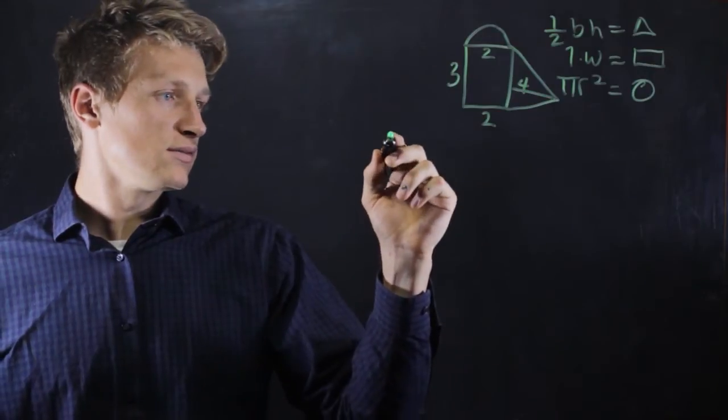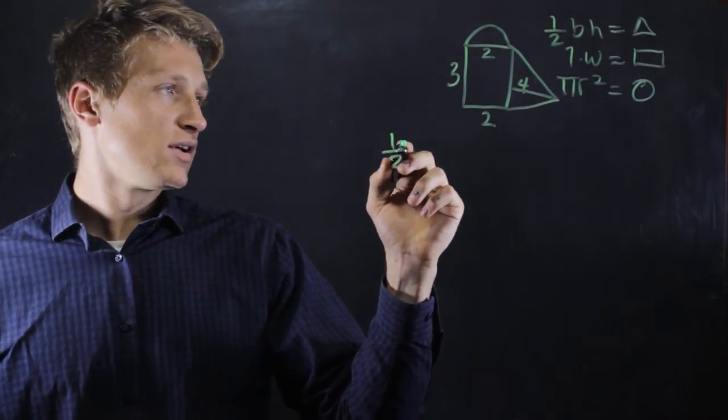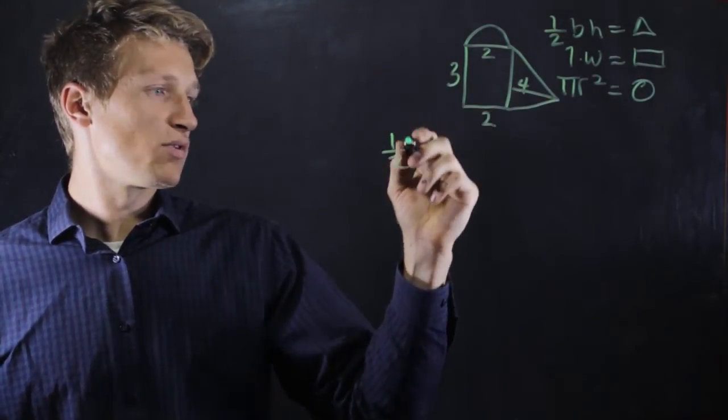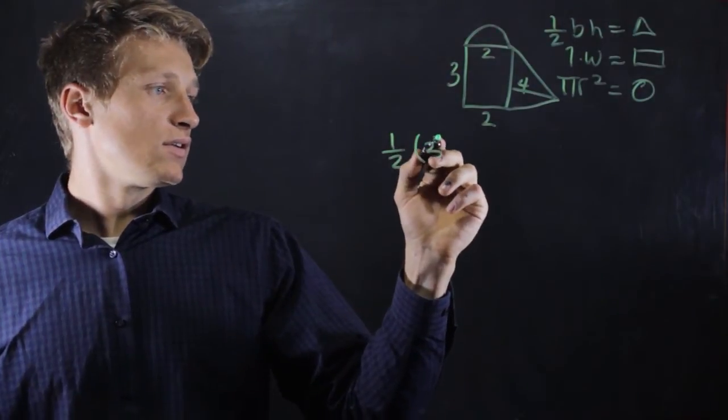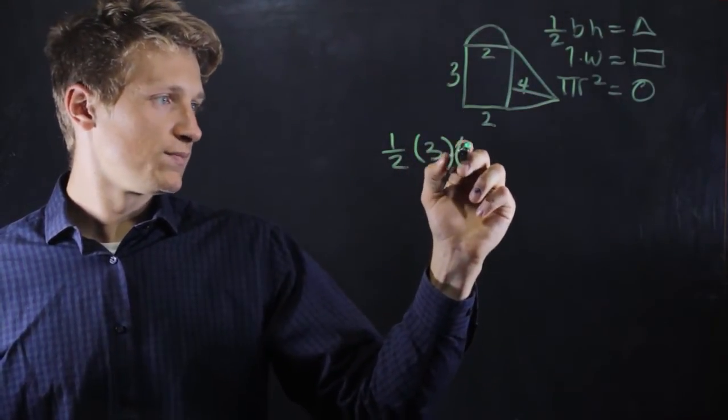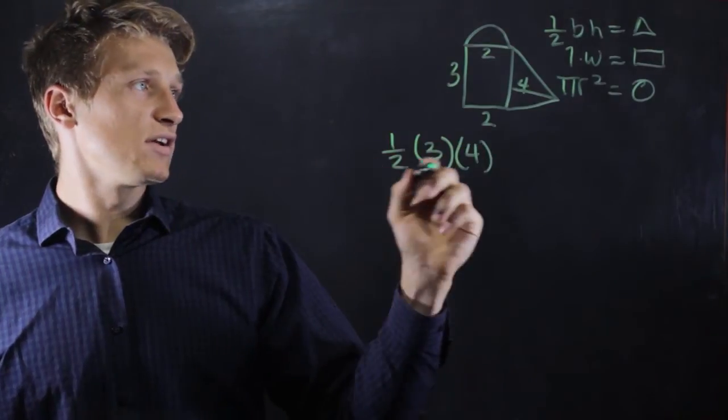So let's do that. 1/2 base is 3 times the height, which is 4. That's the area of the triangle.